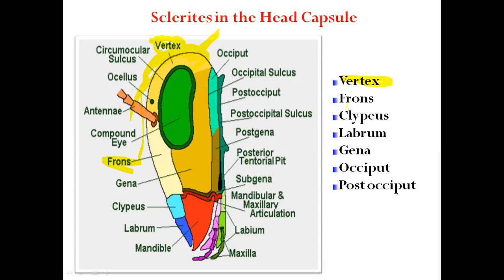The frons is the facial part of the head region, which is dorsally located and attached to the clypeus sclerite. It is bounded laterally by the frontogenal sulcus, and the median ocellus is formed on it.